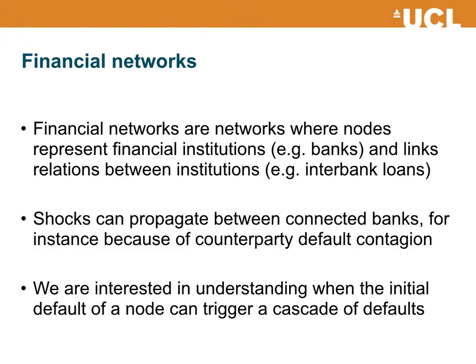If a bank lends money to another bank and the second bank defaults, then this is a problem for the first bank because it will not recover, at least not in full, the amount that was lent to the defaulted bank. So in this contagion mechanism, stress can propagate from borrowers to lenders, and then to the lenders of the lenders, because typically a bank is both lending and borrowing at the same time in the interbank market. We are interested here in understanding when the initial default of a node or a group of nodes can trigger a cascade of defaults.